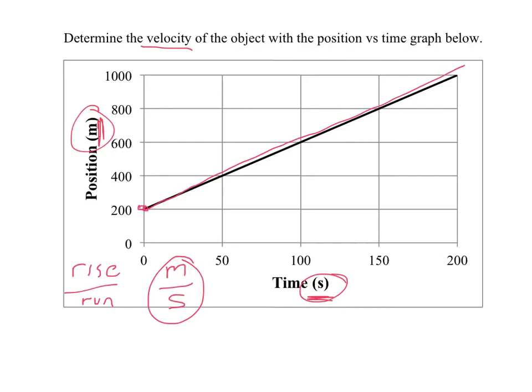If we want, we can pick the first point and the last point and find the rise and the run. Over this time, it goes up a total of 800 meters from 200 to 1,000, and it has a total amount of time of 200 seconds.